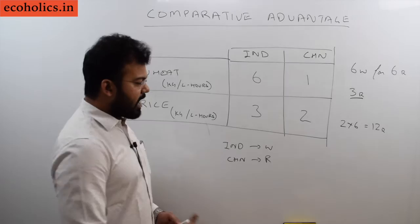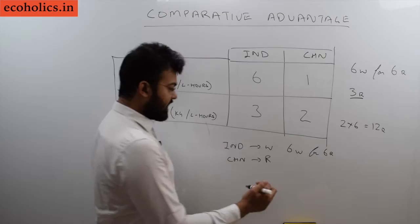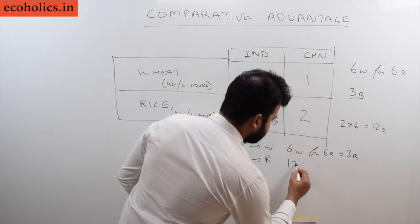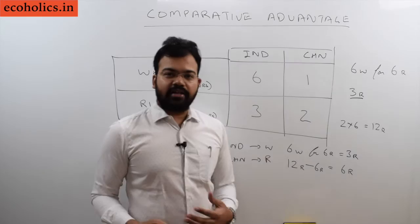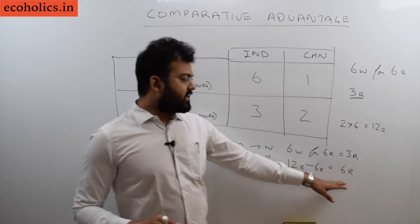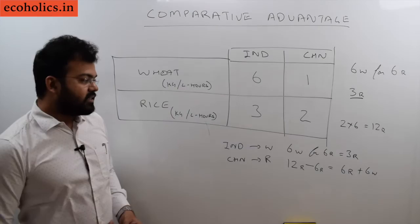India will gain 6W in place of 6R, so India will gain 3R. That is 3R India will gain. What about China? China is producing 12R. They are giving 6R to India, remaining 6R is their advantage. So after international trade, India is getting 3R extra and China is getting 6R remaining from this production as well as 6W from India. This is how we can say about this particular complex situation.